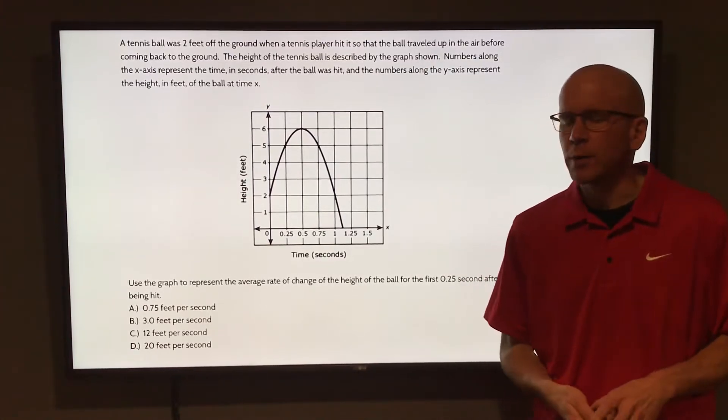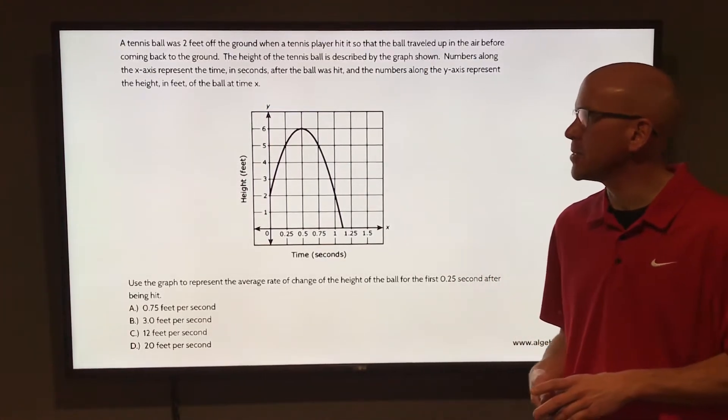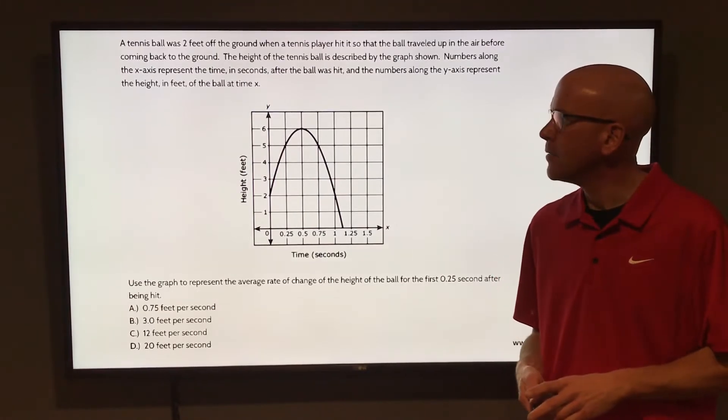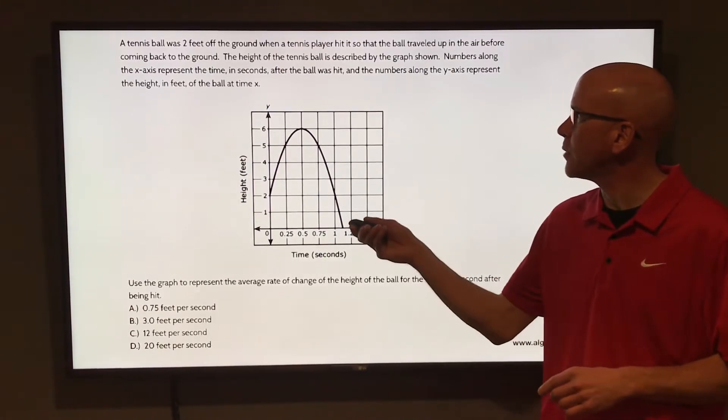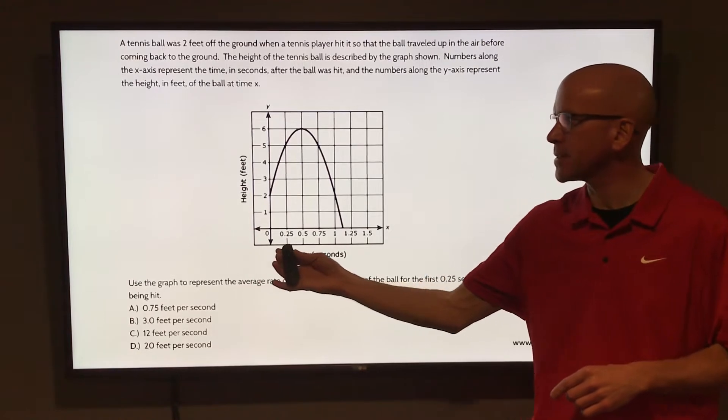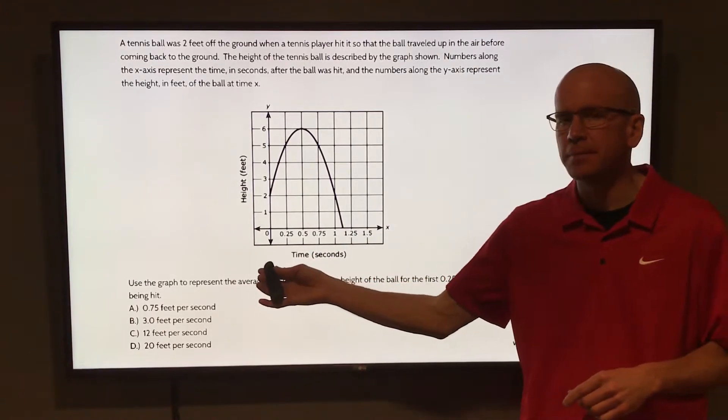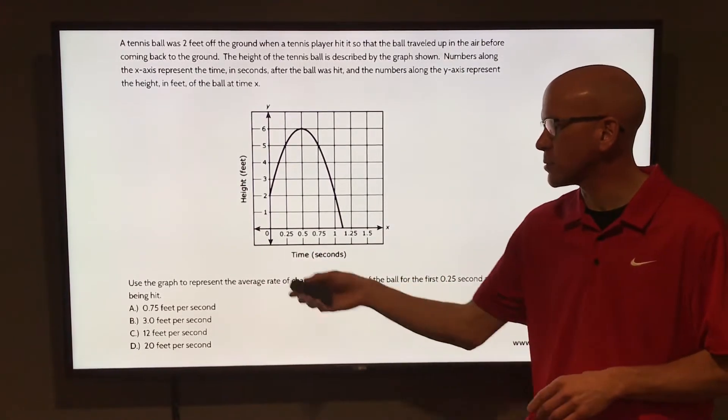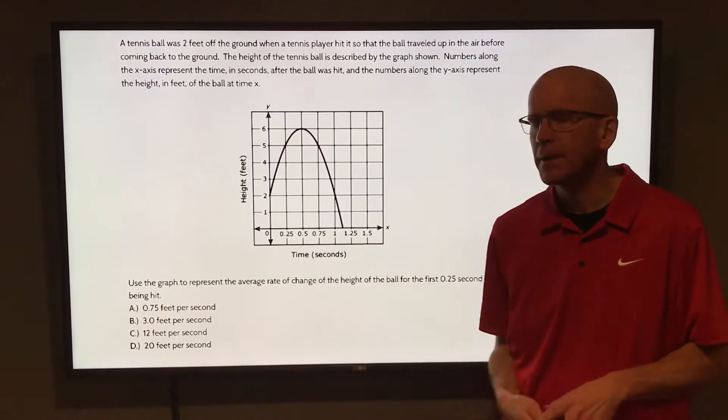A tennis ball is two feet off the ground when a tennis player hit it so that the ball traveled up in the air before coming back to the ground. The height of the tennis ball is described by the graph shown. Numbers along the x-axis represent the time in seconds after the ball was hit, and the numbers along the y-axis represent the height in feet of the ball at a time of x.